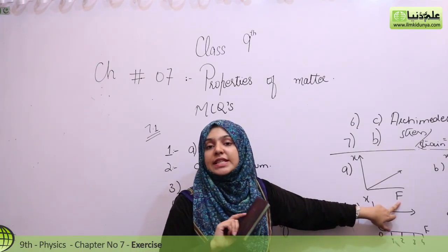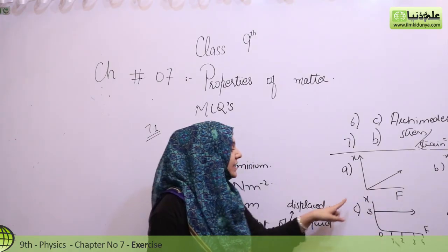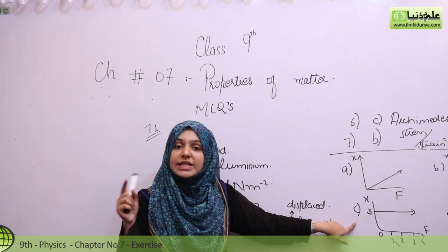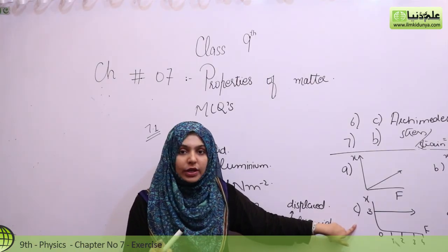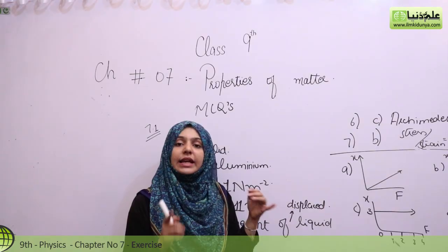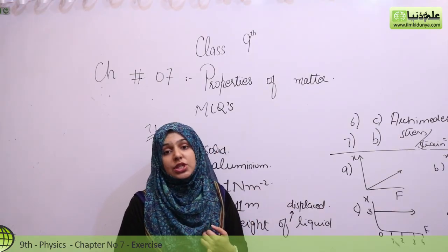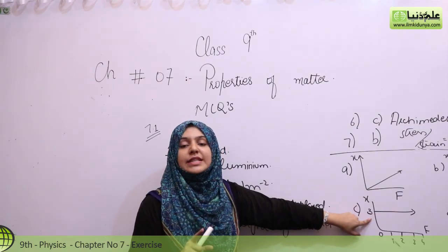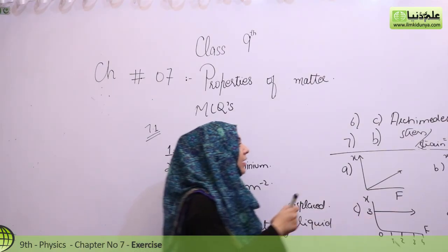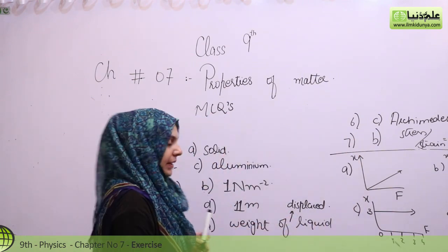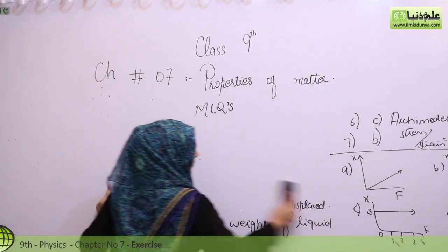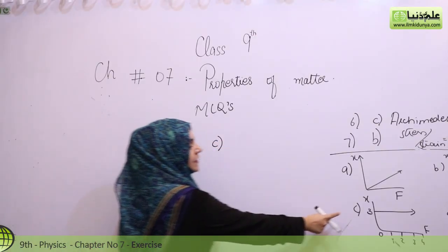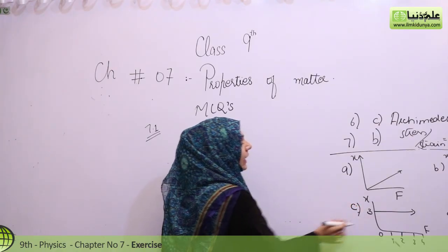If we keep adding more force but there is no change in extension, this means the graph doesn't obey Hooke's law. Hooke's law says that if we apply stress, there should be a proportional change in extension. If the graph shows no change in extension despite increasing force, it violates Hooke's law. So the right option for Question 8 is C — graph C does not obey Hooke's law.